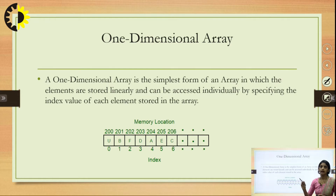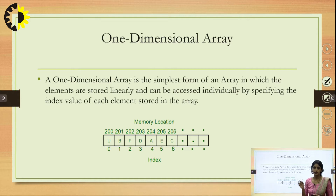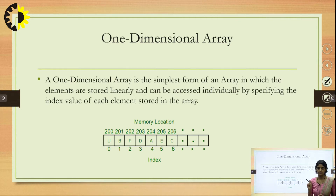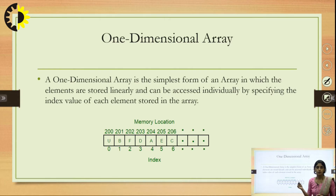Suppose in a linear array 'a', the size of the array is 10 and the array index starts from 0, going up to index 9. Using index 0 we can access the first element, so a[0] is the first element, a[1] is the second element, and like that a[9] will be the last element.